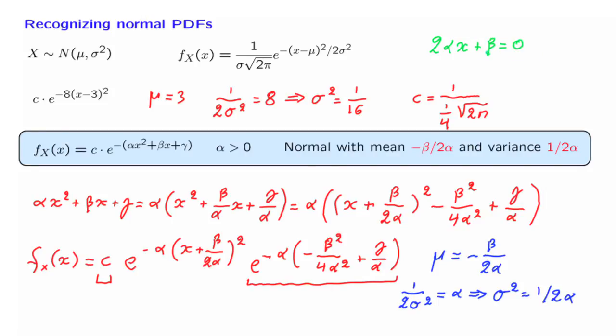So setting the derivative of the exponent to 0 gives us the equation 2 alpha x plus beta equal to 0. And from this, we solve for x. And we can tell that the peak of the distribution is going to be when x takes this particular value. This value must also be equal to the mean.